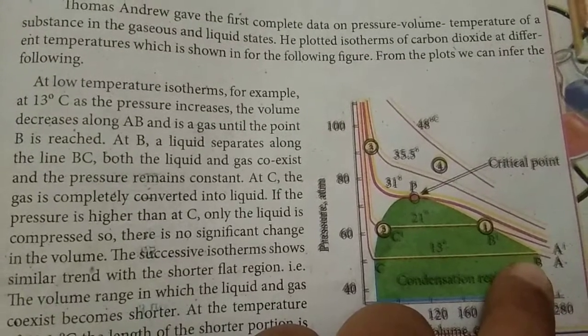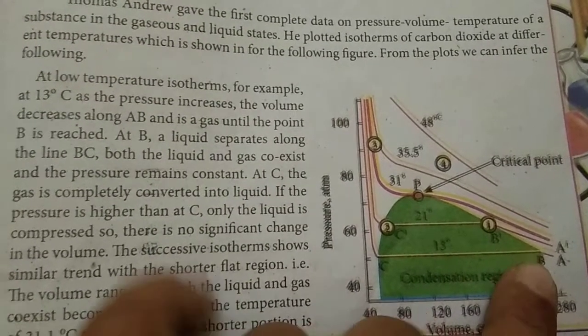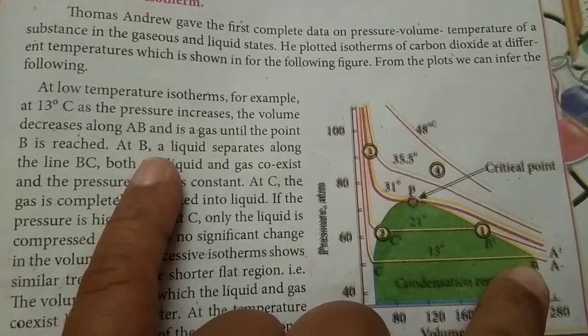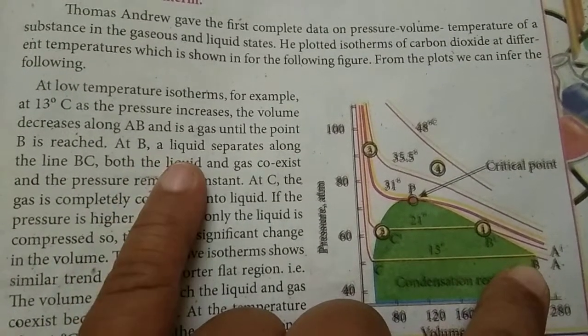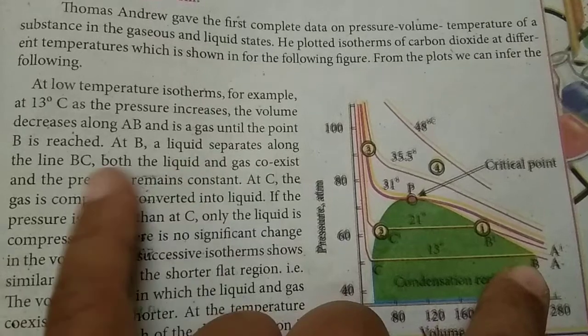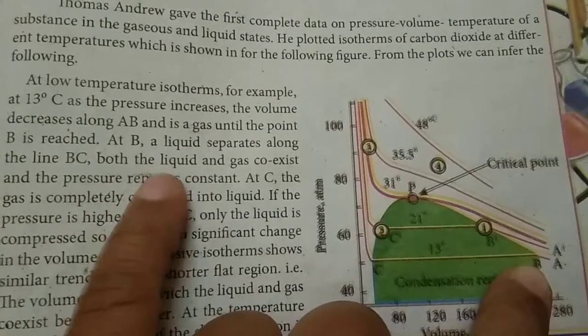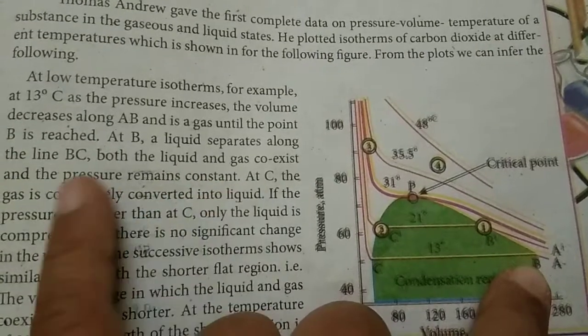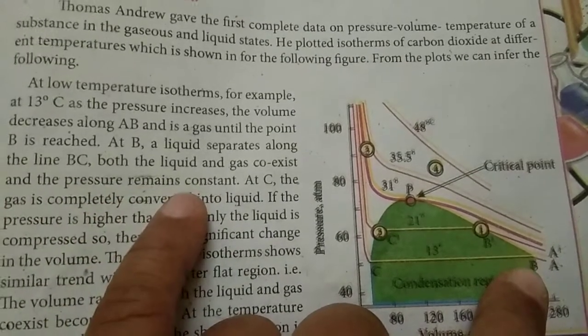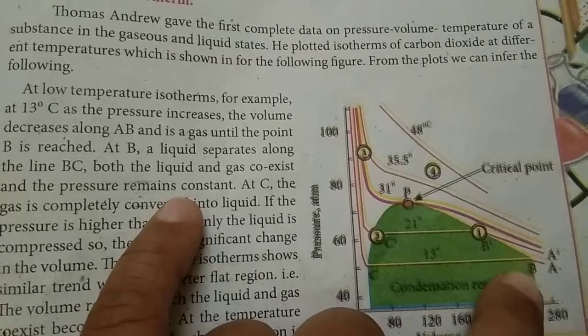At B, a liquid separates along the line BC. Both the liquid and gas coexist, and the pressure remains constant.